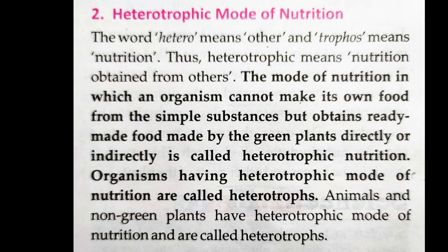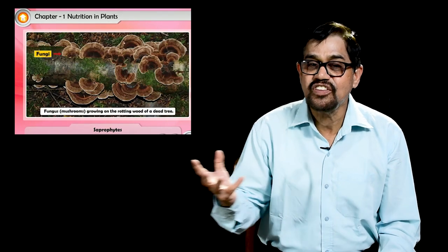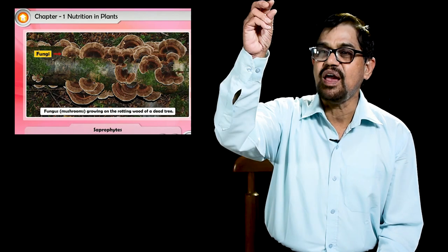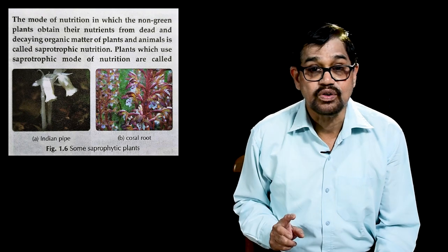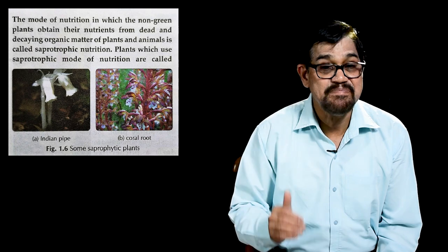Heterotrophic mode of nutrition is the mode in which an organism cannot make its own food from simple substances but obtains ready-made food made by green plants directly or indirectly. Organisms with this mode of nutrition are called heterotrophs. There are three types. Saprotrophic nutrition involves plants that take nutrition from dead or decaying organic matter. They are typically whitish and have no leaves; only a stem and a flower may emerge, as in the Indian pipe or coral roots.